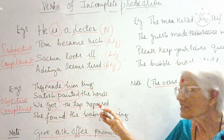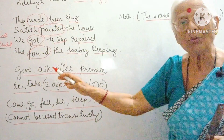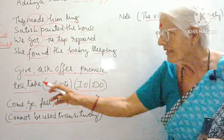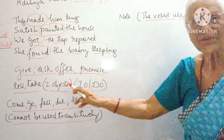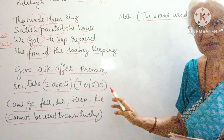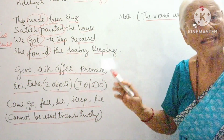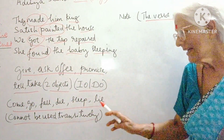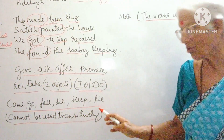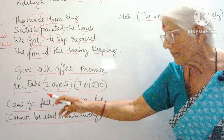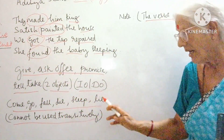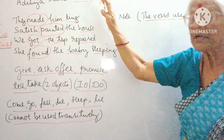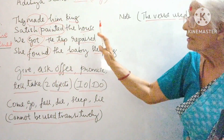This is called an objective complement. Now you have to remember: verbs like give, ask, offer, promise, tell, and take all need two objects — an indirect object and a direct object. One more important point: come, go, fall, die, sleep, and lie cannot be used transitively. We have discussed the subjective complement, where the complement belongs to the subject, and the objective complement, where the complement belongs to the object.